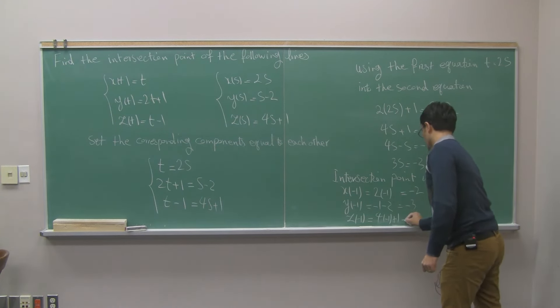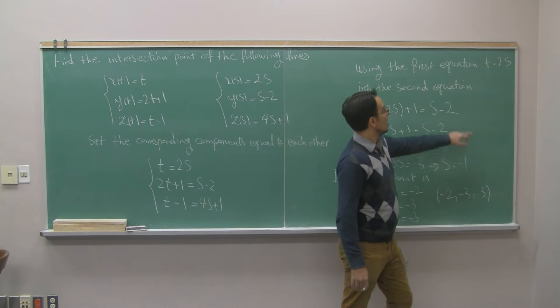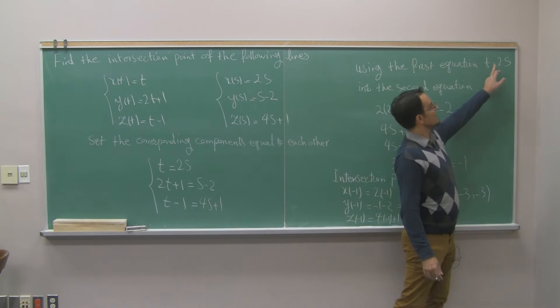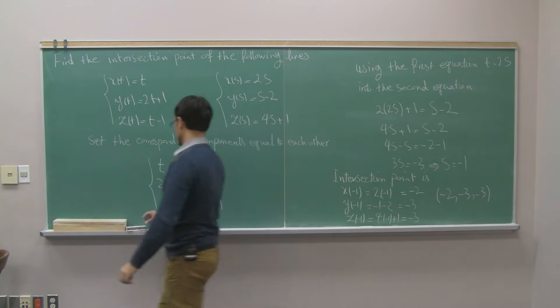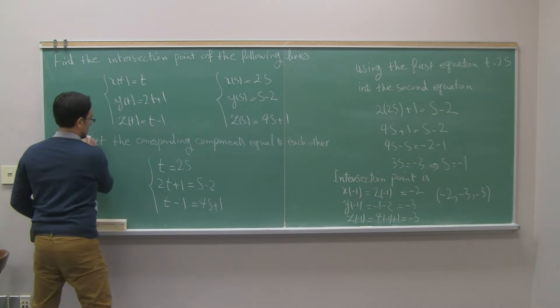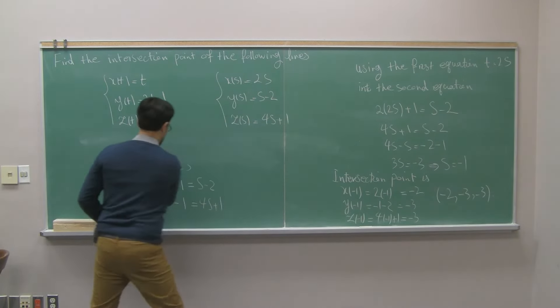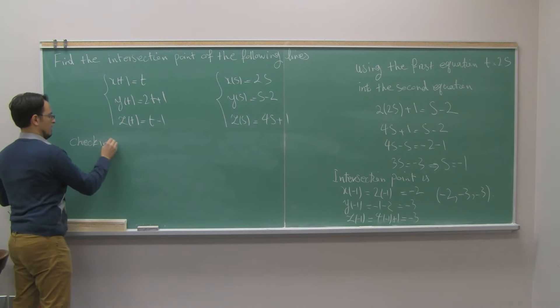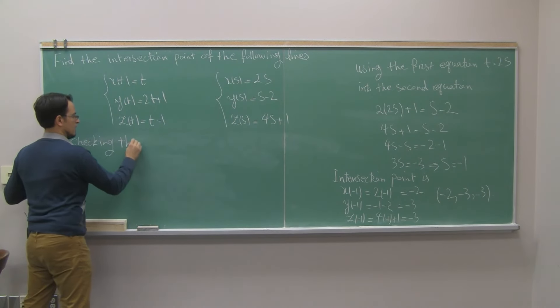And what is that step? I know that s negative 1 will give me the intersection point. But on the other hand, I know that t is 2 times s. So that gives me, let me erase this part. Since, so I'm just checking the answer.